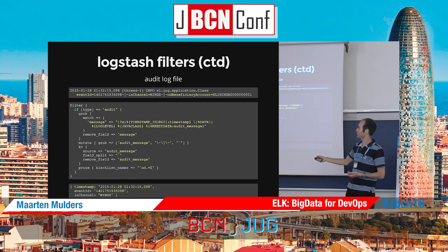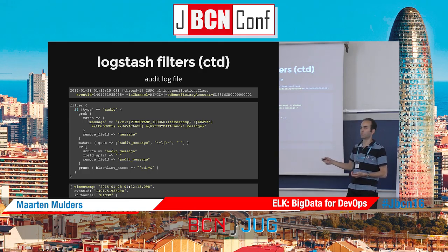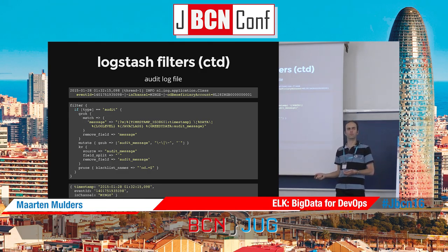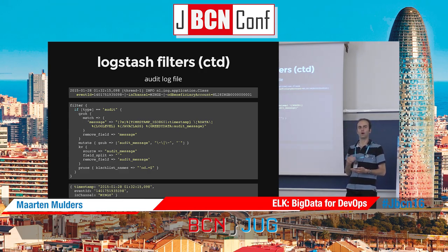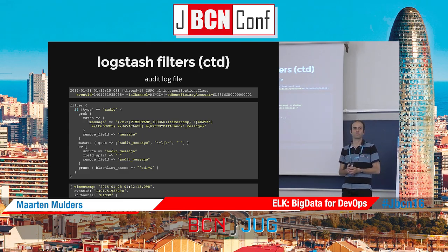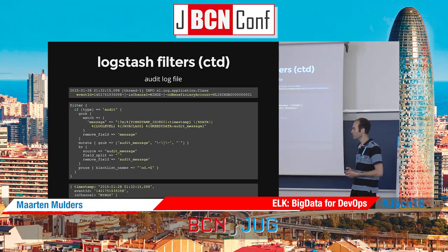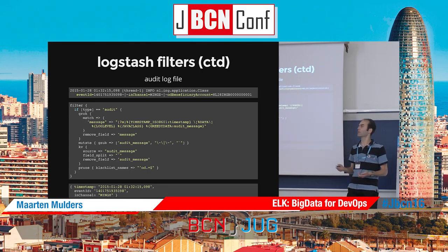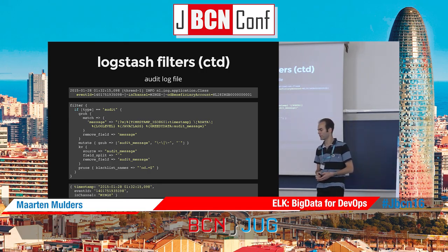Finally, if a field starts with 'OD' - which stands for order detail - then it's on a blacklist and we remove the field. That's the most important part because that's where we remove all the sensitive information, since they all happened to be in 'OD_yada_yada' fields. If the sensitive data wasn't consistently named, you could easily add more names to the blacklist. After this, the log event contains the timestamp, the event ID, and the channel, while the OD beneficiary account has been removed.